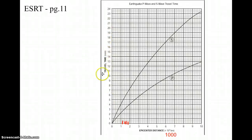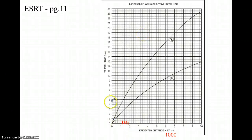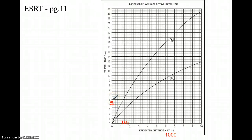On the y-axis, we have the travel time in minutes — this tells us how many minutes it takes for P waves and S waves to travel a certain distance. These numbers are in 1-minute intervals, which means the small lines count in 20-second intervals. So if the bottom line represents 4 minutes, the line above it is 4 minutes and 20 seconds, the next is 4 minutes and 40 seconds, and then obviously 5 minutes.